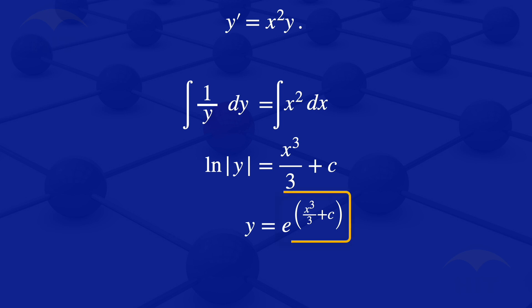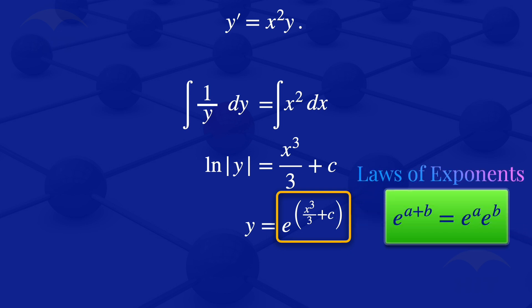Now looking at this part here, the exponent there, we can simplify that by using the laws of exponents. So we would have the exponent of A plus B equals exponent of A times exponent of B.